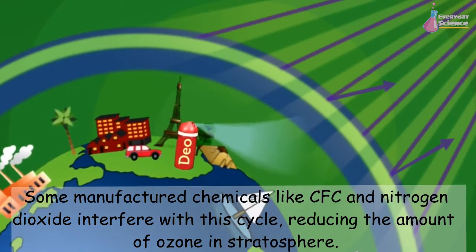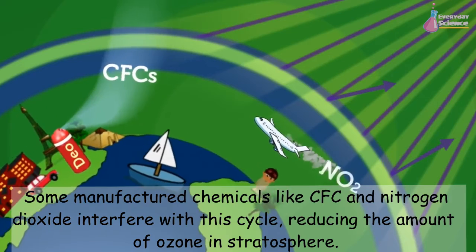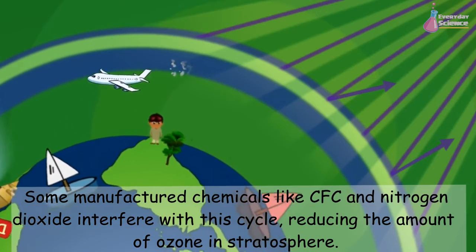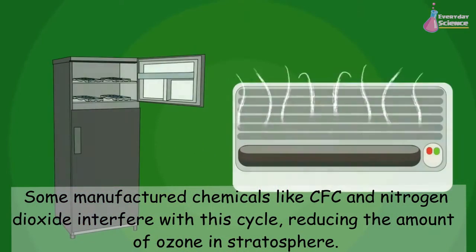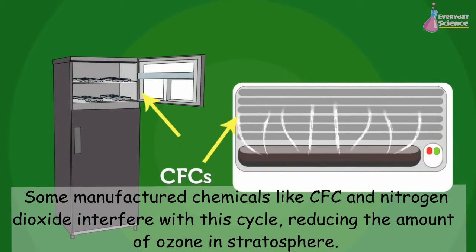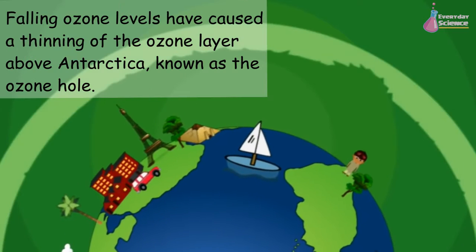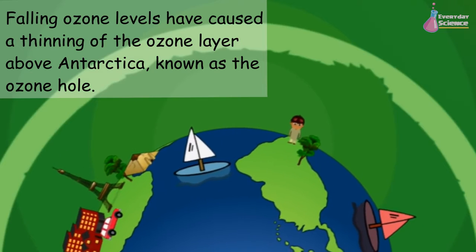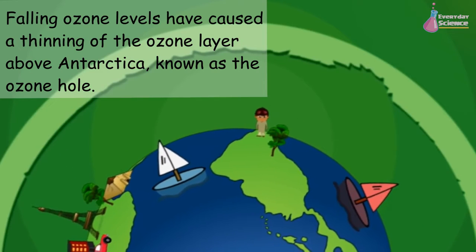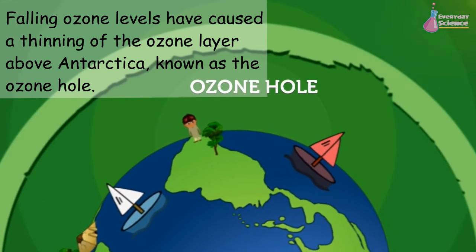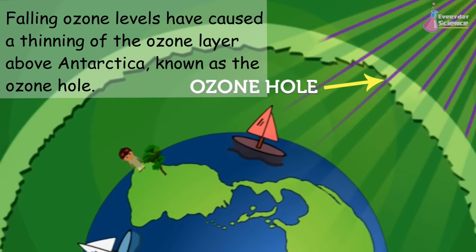Some manufactured chemicals like CFC and nitrogen dioxide interfere with this cycle, reducing the amount of ozone in the stratosphere. Falling ozone levels have caused a thinning of the ozone layer above Antarctica, known as the ozone hole.